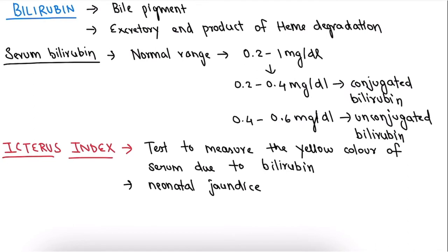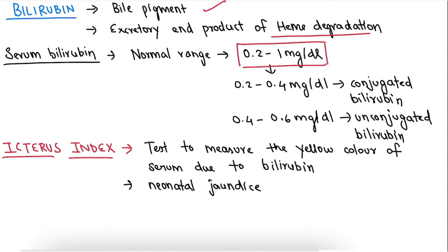Now let's study these tests one by one, starting with bilirubin. Bilirubin is a bile pigment and is the excretory end product of heme degradation. The normal range of serum bilirubin is 0.2 to 1 milligram per deciliter. Out of this, 0.2 to 0.4 mg/dL is conjugated bilirubin and 0.4 to 0.6 mg/dL is unconjugated bilirubin.